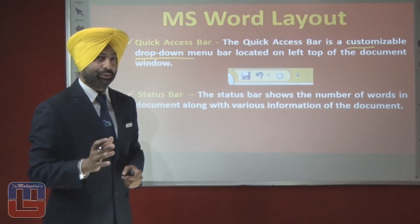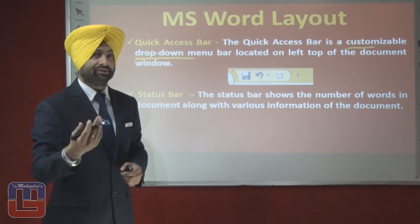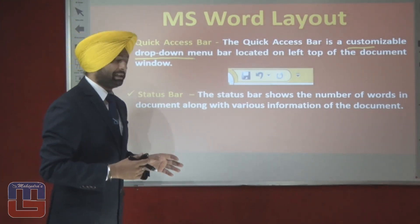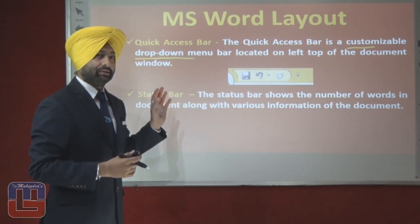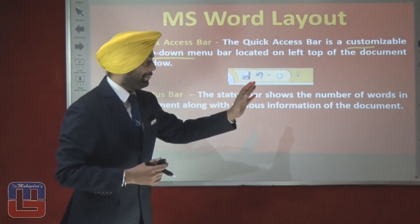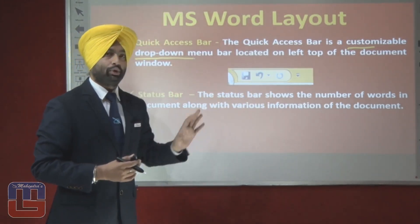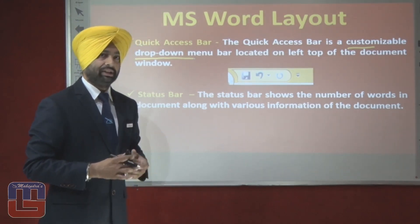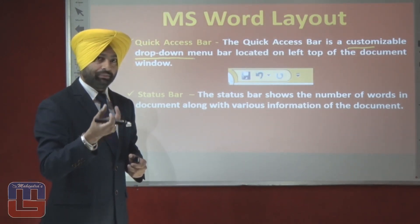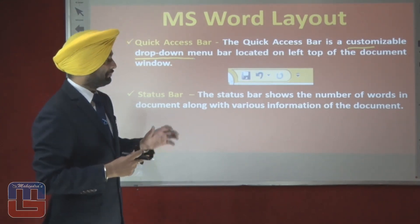You can even customize the Quick Access Bar by adding your own menus or options that you want displayed there. Next is the status bar. The status bar shows the number of words in the document along with various information about the document. It is located at the bottom of the document window and holds the word count and page number.